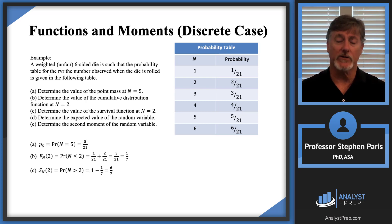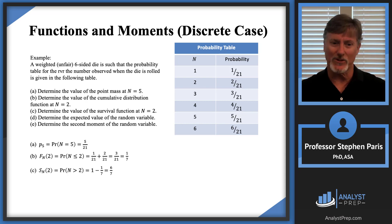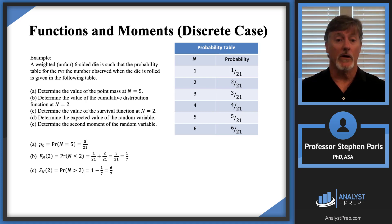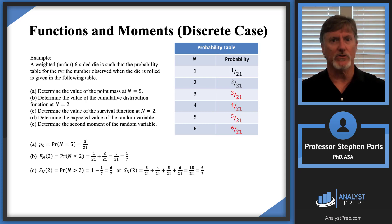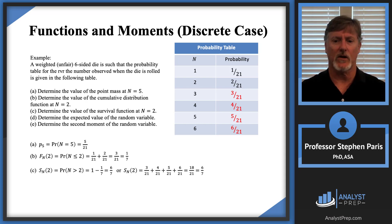Part C: what's the survival function at two? Since I already did part B and know that the distribution function and survival function evaluated at the same value sum to one, I'll use that fact: survival function at two equals one minus distribution function at two, which is one minus one-seventh, or six-sevenths. If you do it directly, the survival function at two is the probability that cap N is strictly greater than two — adding those values up also gives six-sevenths.